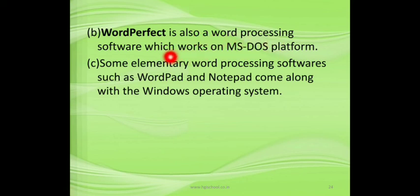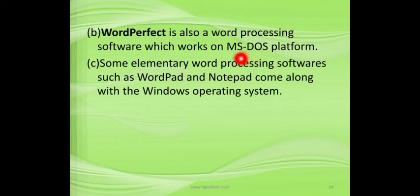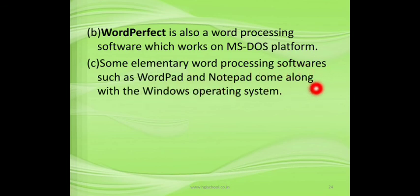Another example is WordPerfect, a word processing software that works on the MS-DOS platform. MS-DOS is a CUI-based operating system of Microsoft — CUI stands for Command User Interface, meaning we can only use this operating system by writing commands; there are no icons or pictures. Additionally, some elementary word processing softwares such as WordPad and Notepad come pre-installed with the Windows operating system by default.